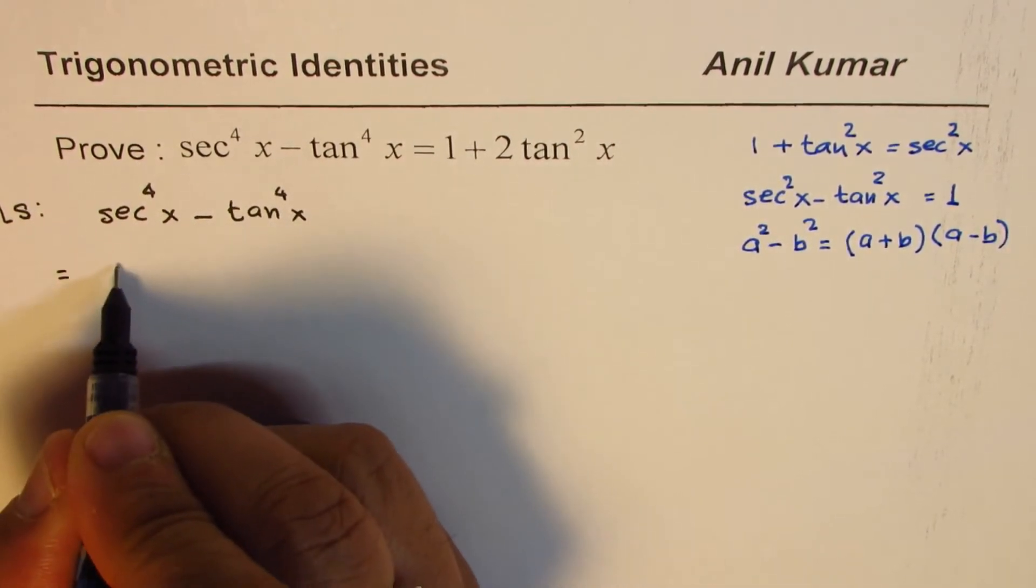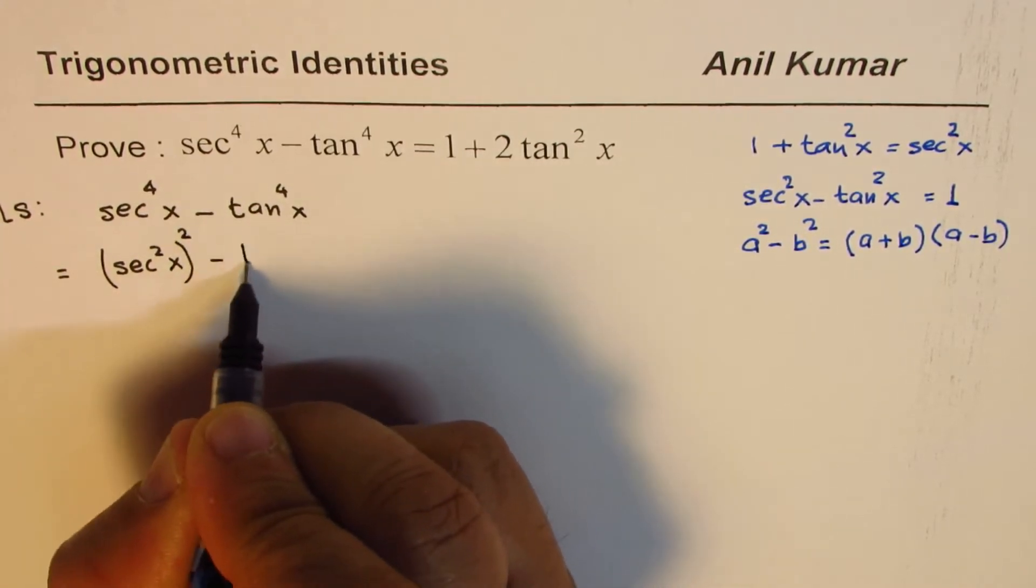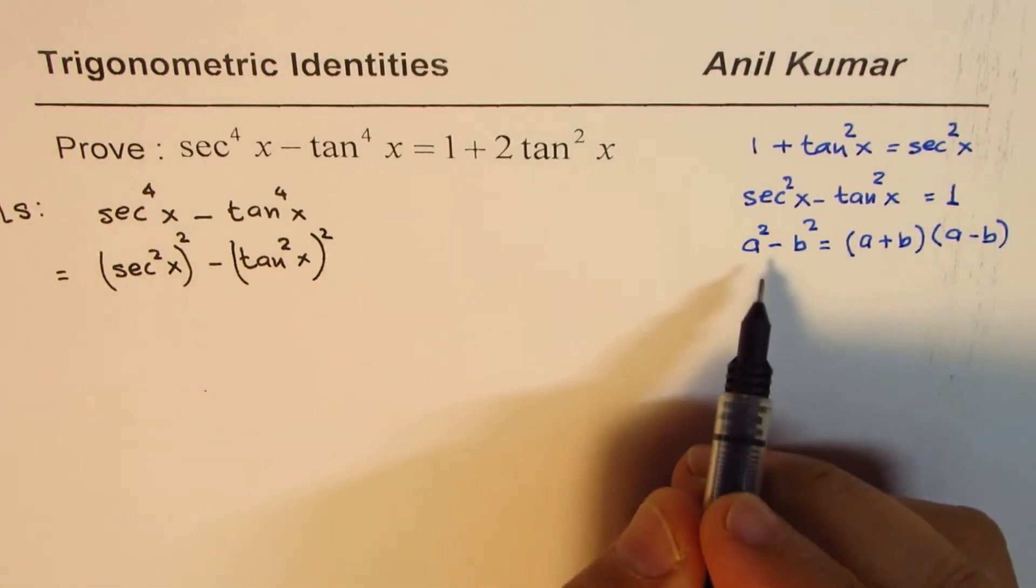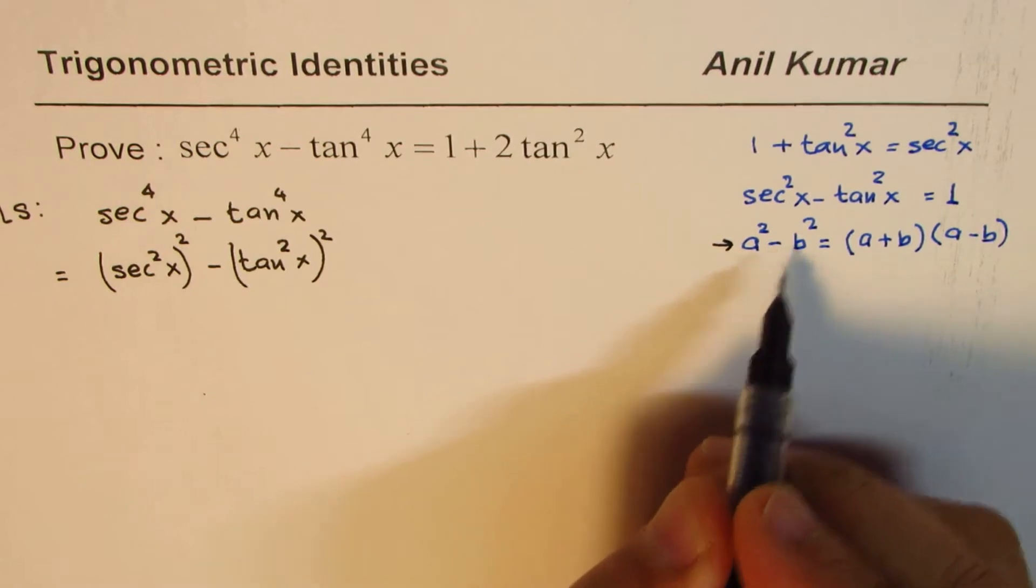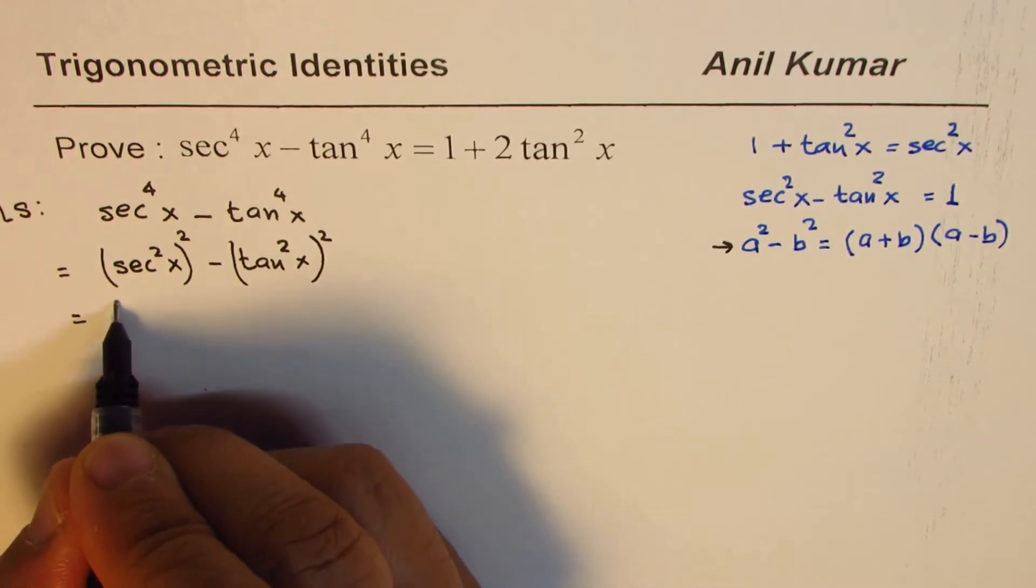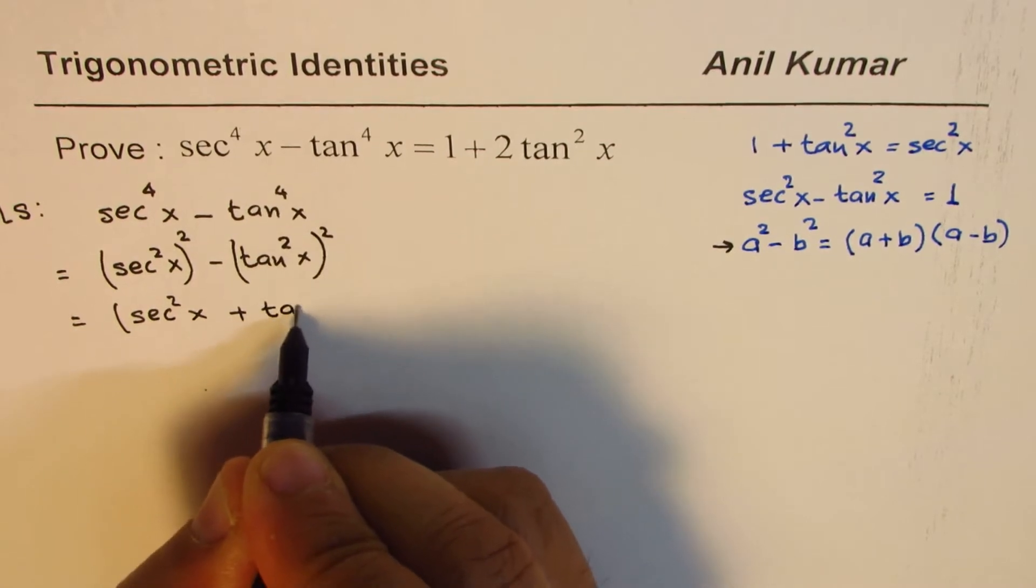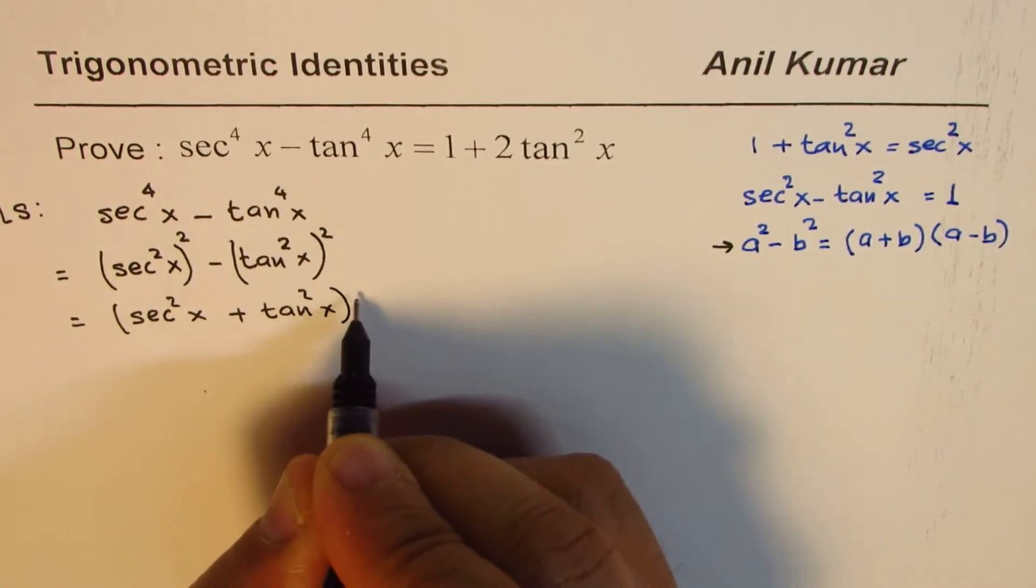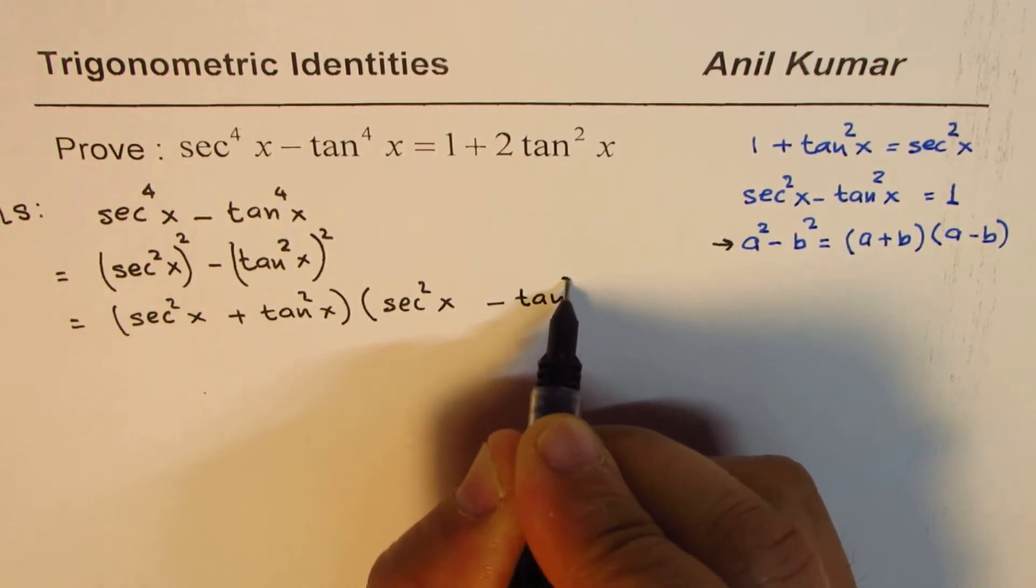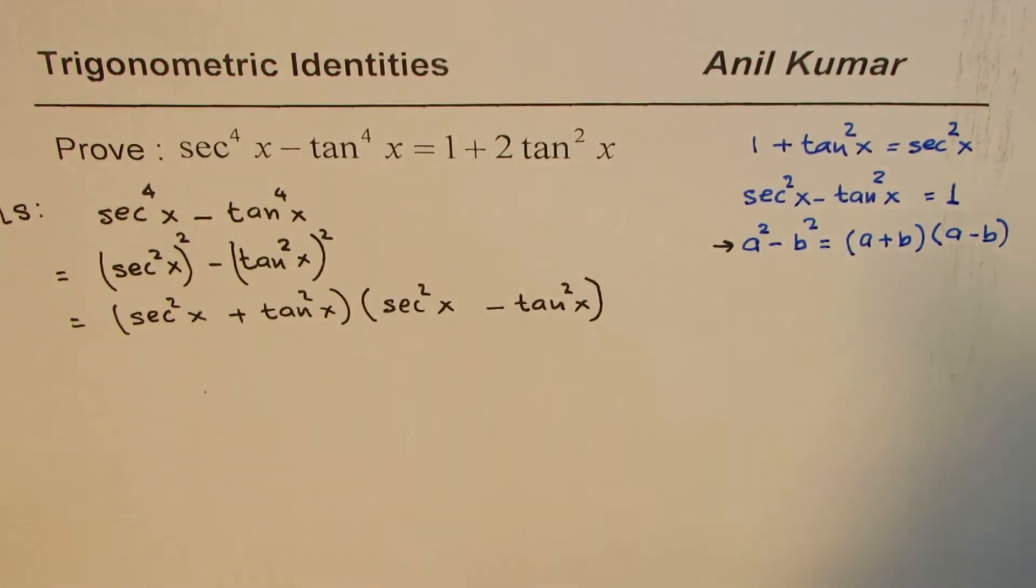We could write this as secant square x whole square minus tan square x whole square. Now we can apply this formula which is a square minus b square to factor as product of sum and difference. So sum will be secant square x plus tan square x times the difference which is secant square x minus tan square x. So we applied this difference formula first.